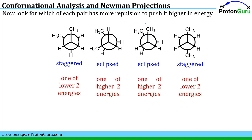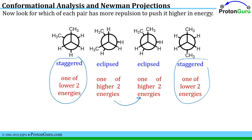Just knowing that, we know that the two staggered conformations are going to be the two lower energy, more stable conformations, and the two eclipsed conformations will be the two higher energy, less stable conformations. So now we just need to compare the two staggered conformations to each other to see which one is the absolute most stable, and then compare the two eclipsed conformations to figure out which is the least stable. The way you do that is you look for repulsions.